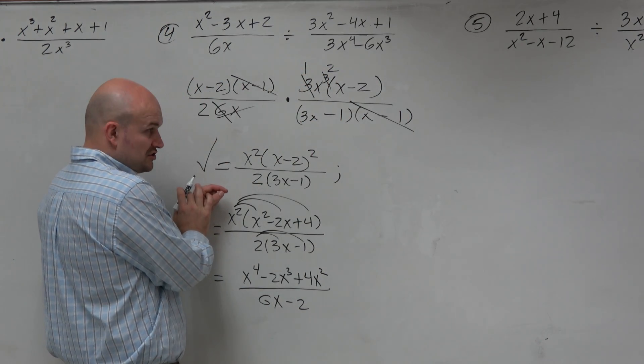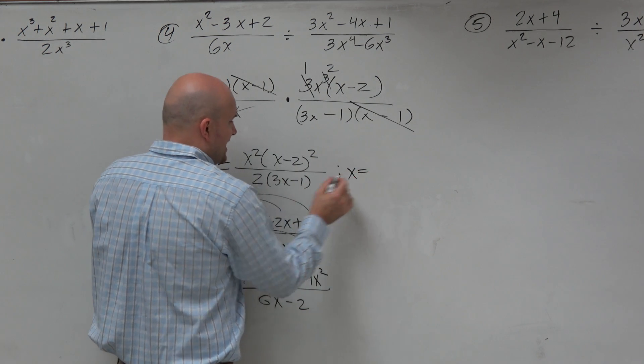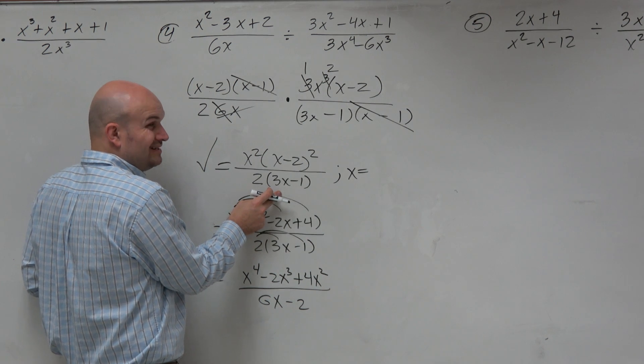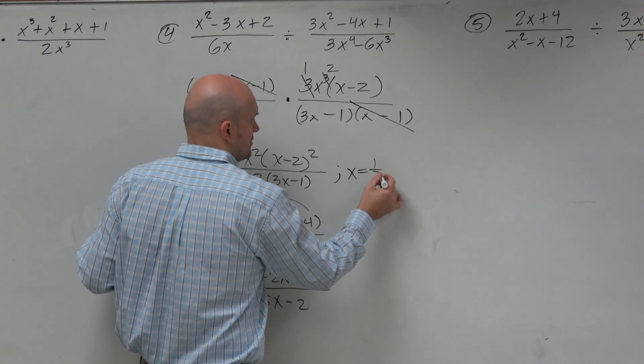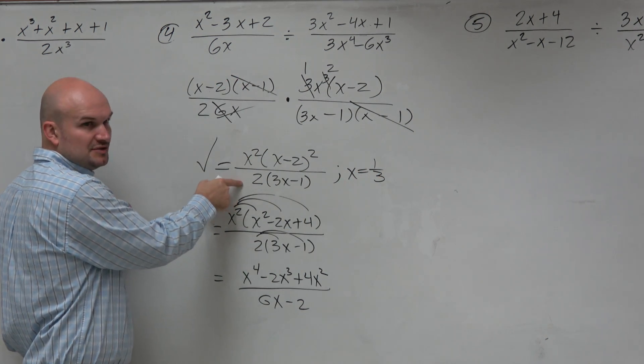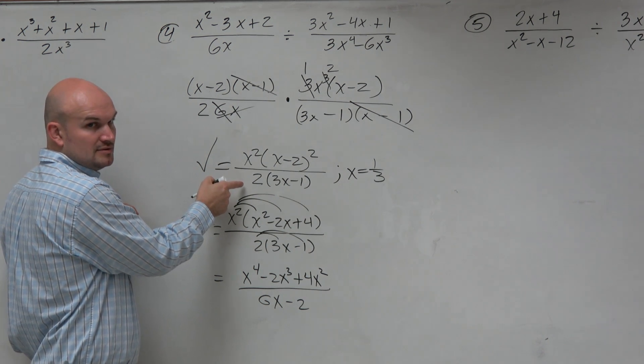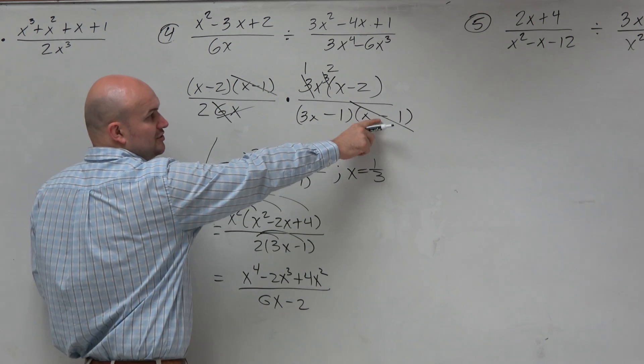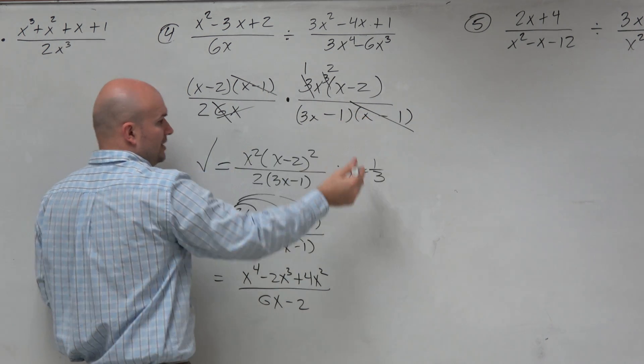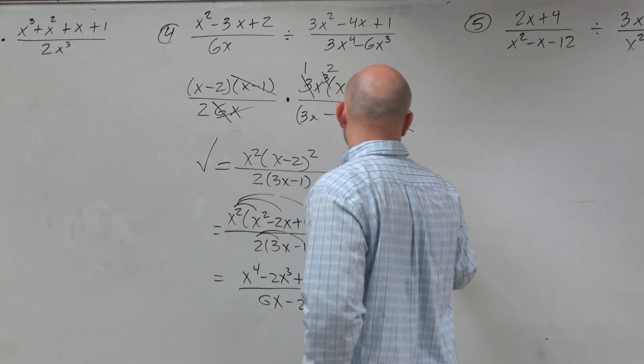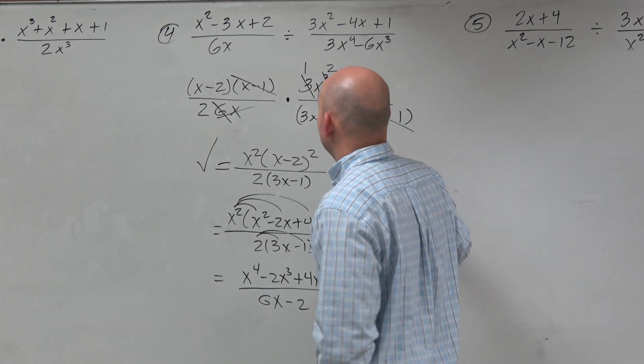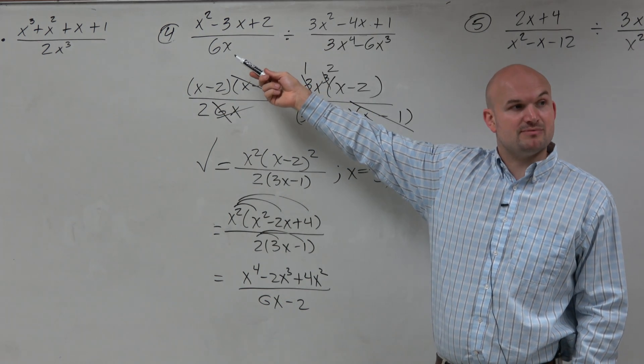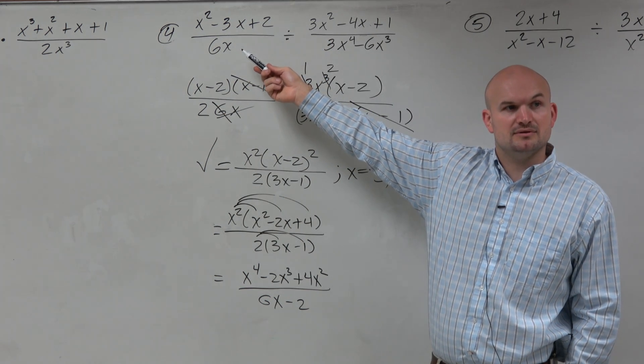But here's the question. Remember the domain restrictions. X cannot equal. If I set this equal to 0 and solve, I would have 1/3. What about 2? Since 2 is in the denominator, we should say x cannot equal 2 or negative 2? No. Don't be tricked because there's a number in the denominator. Right? But we do know x cannot equal 1.